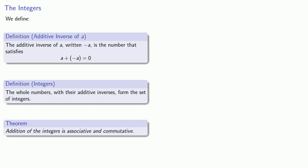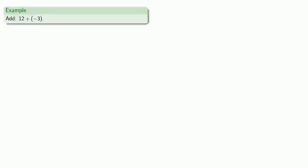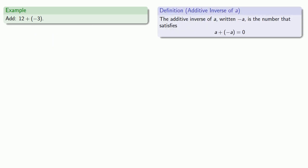An important idea in mathematics and in life: you can have anything you want as long as it's paid for. Let's see how that works. Suppose we want to find 12 plus the additive inverse of 3.